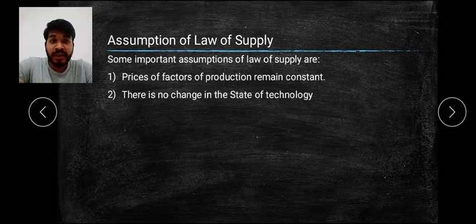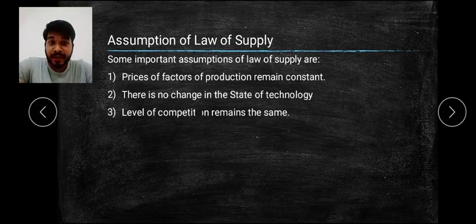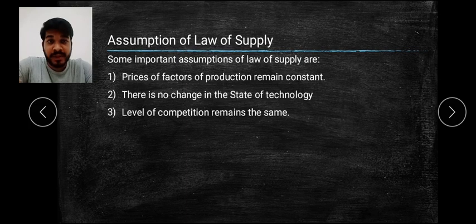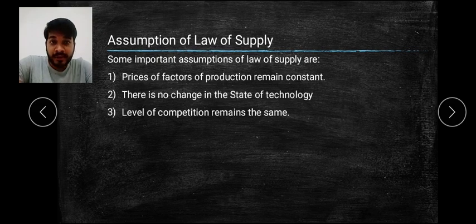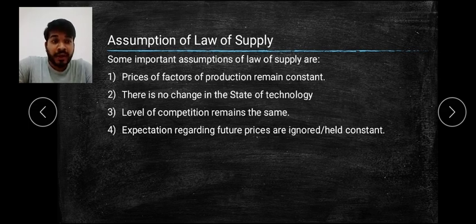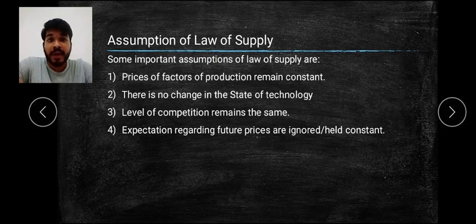Second, there should be no change in the state of technology when we are applying this Law of Supply. Third, the level of competition remains the same — competition means different sellers in the market. You are not the only seller; there are different sellers also. That particular level of competition should remain the same. It should not increase or decrease the supply, and there should not be an increase or decrease in the number of sellers when measuring the Law of Supply.